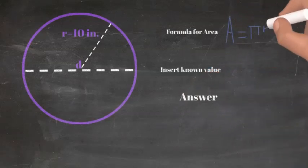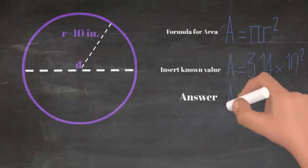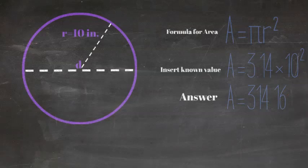This circle has a radius of 10 inches. Let's plug in our known values for this equation. We now have pi times 10 squared. When we solve this problem, the total area of this circle is 314.16 square inches.